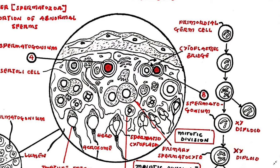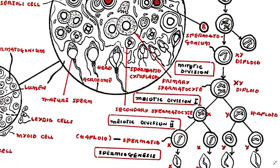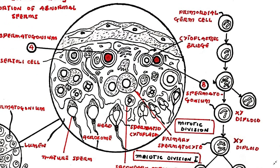They continue to divide by mitosis until they become primary spermatocytes. The cytoplasmic bridges will maintain connections between a group of cells during spermatogenesis, thereby synchronizing the process to ensure the production of groups of spermatozoa.